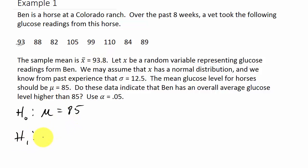Then the alternate hypothesis: well, based on our sample, we think it's higher. See, the 93.8, we think it's higher than the 85, so the alternate hypothesis would be mu is greater than 85.